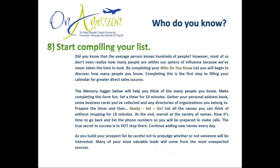The memory jogger on the next page will help you think of many people you know. Set a timer, gather your personal address book, business cards you've collected, and any directories of organizations you belong to. Stay focused, eliminate all distractions, and start writing — list all the names you can think of without stopping for 10 minutes. At the end, go back and list the phone numbers, but never list phone numbers while writing names as that's a distraction. The true secret to success: continue adding new names every day as you build your prospect list, and be careful not to prejudge whether or not someone will be interested.